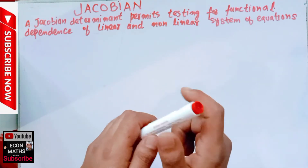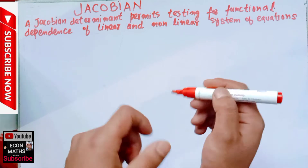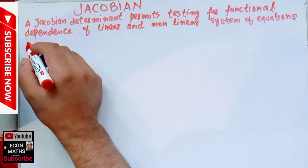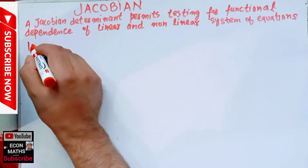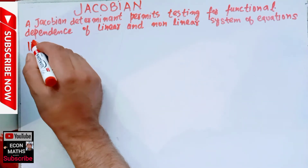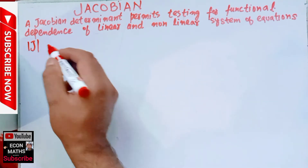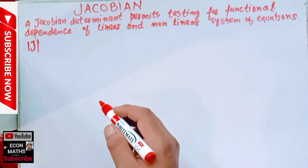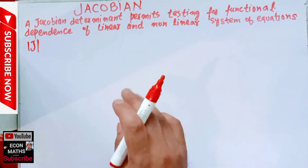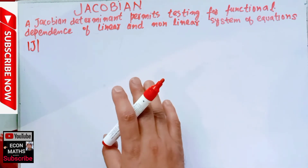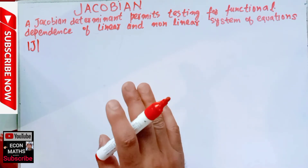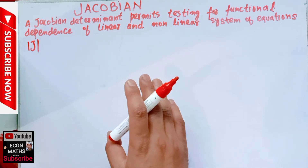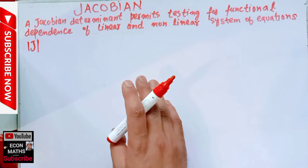The Jacobian determinant, denoted by J, is composed of all the first-order partial derivatives of a system of equations, arranged in an ordered sequence.